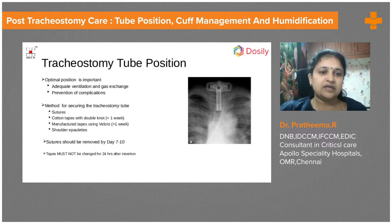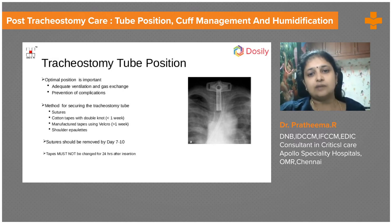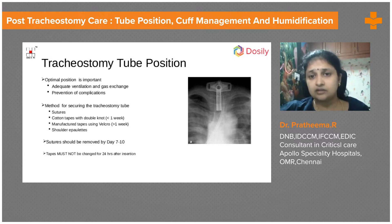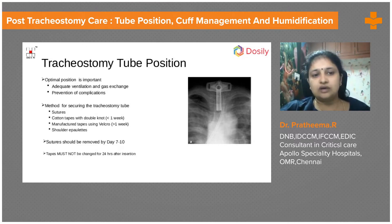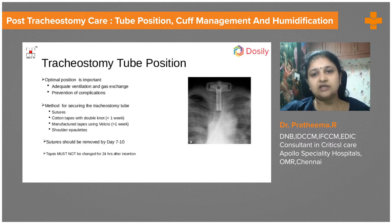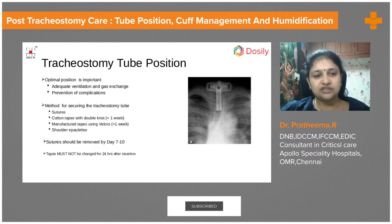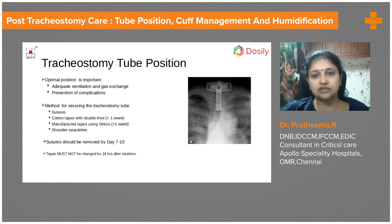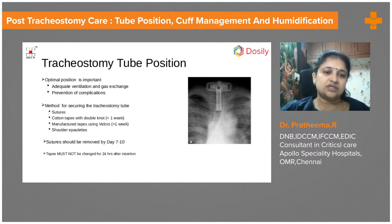The tube can also be secured with cotton tapes with a double knot. If it is less than one week, we have to be very careful because the tract will not yet be formed — it is still fresh and fragile. If the tracheostomy tube comes out within seven days, we cannot directly reinsert it because the tract is not formed; it takes at least seven to ten days. If dislodged, we must re-intubate and redo the tracheostomy.